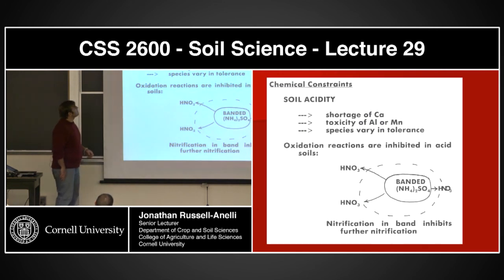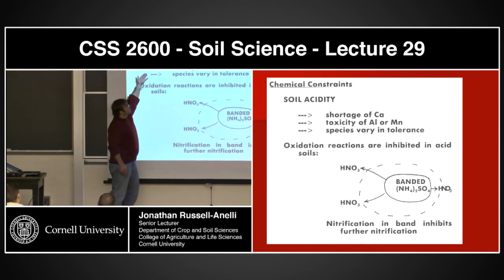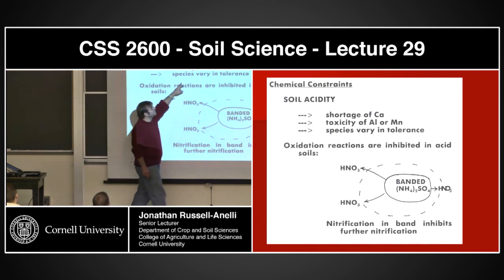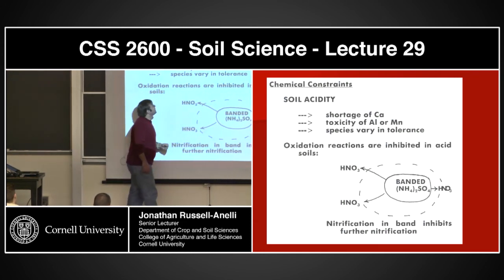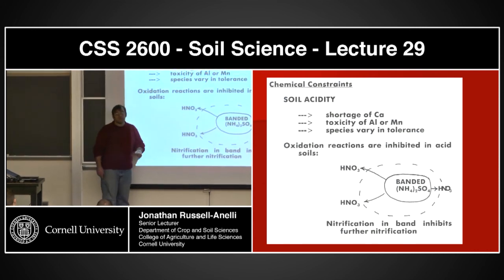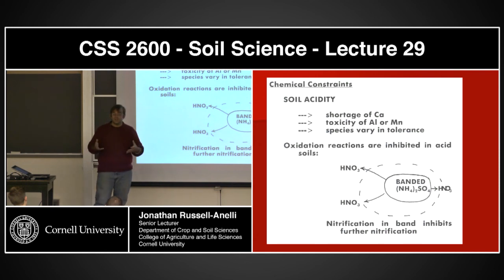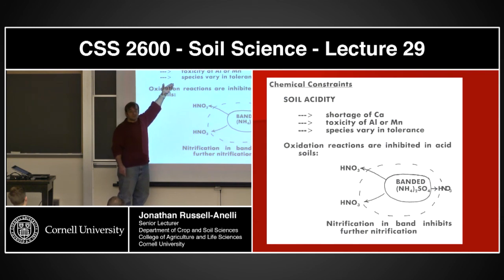There are also chemical constraints. Soil acidity is a big one — because of nutrient availability issues. If an organism needs calcium and the system goes acidic, there's going to be a shortage of calcium. If the system goes toxic, you can have toxicity of aluminum and potentially manganese issues. The reality is that species vary in their tolerances because they've adapted to certain situations and filled certain niches. If I have a system that's acidic and killing off everything else, that might actually be an advantage to an organism that can deal with aluminum toxicity.